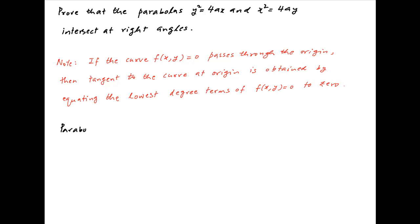In this case, the two curves are y squared equals 4ax and x squared equals 4ay. Both of these parabolas pass through the origin.